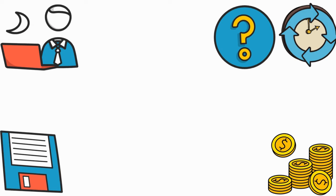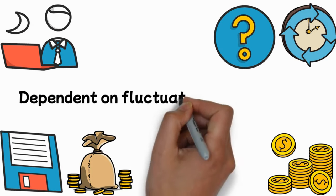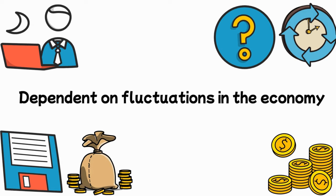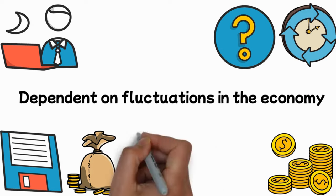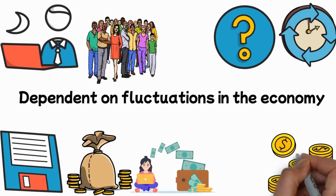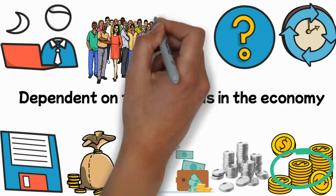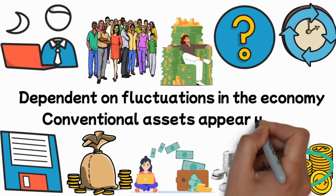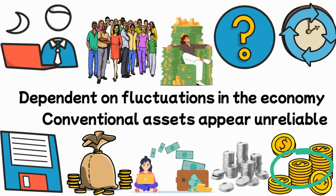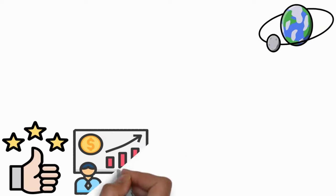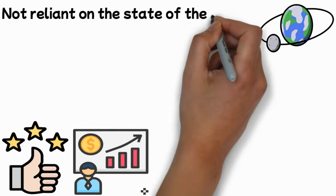Unlike some other investments, it is not dependent on fluctuations in the economy. These metals are seen by many as secure means of storing cash. Many people resort to gold and silver as a safe haven for their riches when conventional assets appear unreliable. These metals also have a universal appeal. They are an excellent option during a global economic slump because they are not reliant on the state of the economy of any one nation.